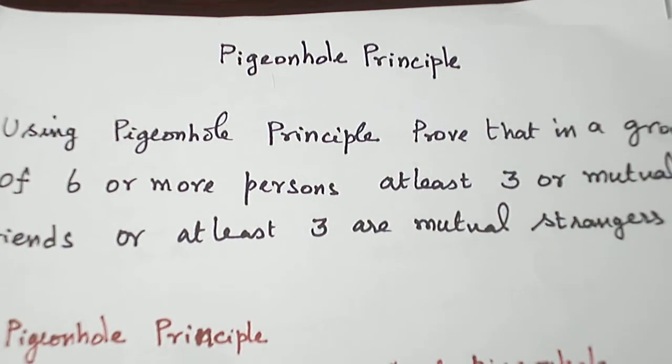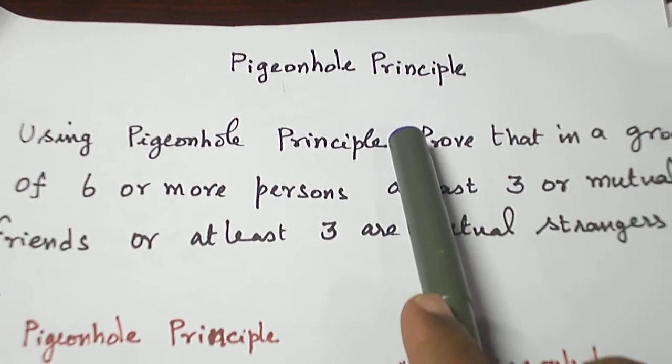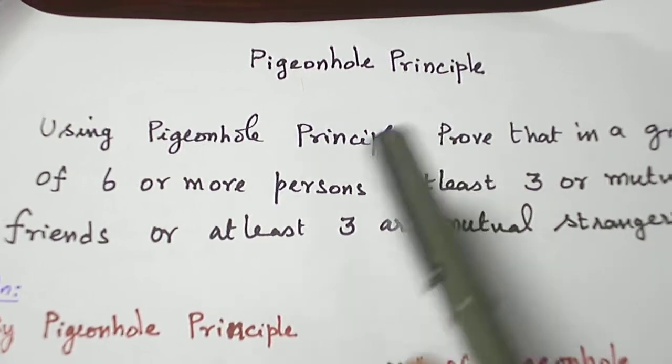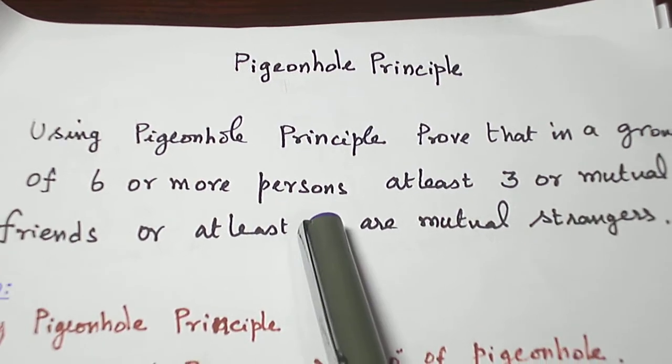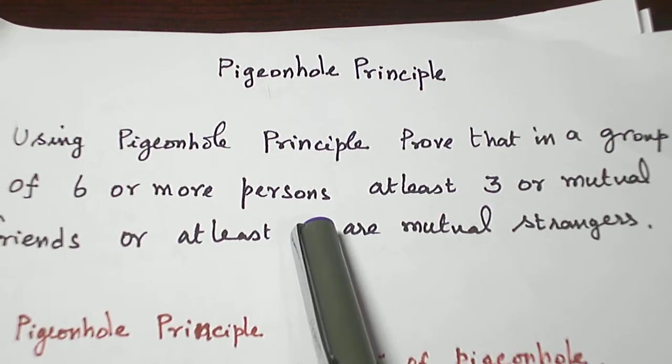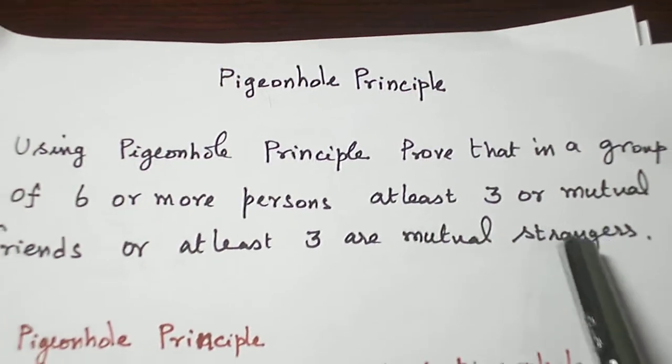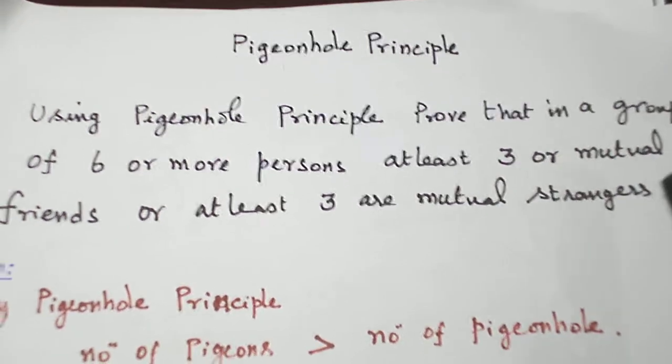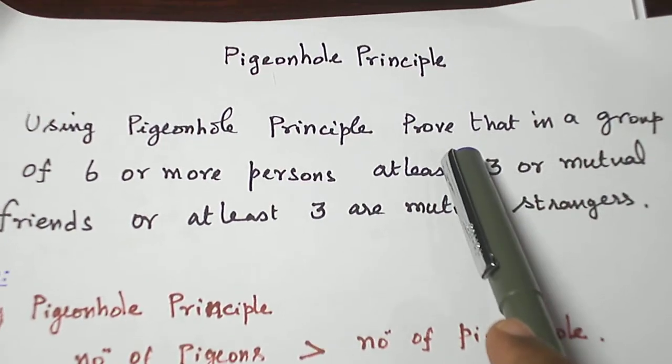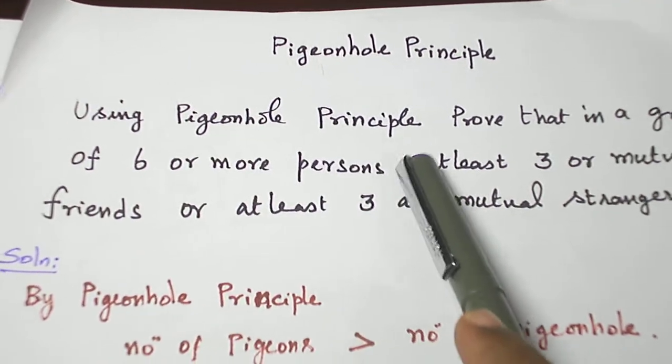Hello students, today let us see a problem from the topic Pigeonhole Principle. The question is this: in a group of 6 people, at least 3 are mutual friends or at least 3 are mutual strangers. This is what we are asked to prove using Pigeonhole Principle.